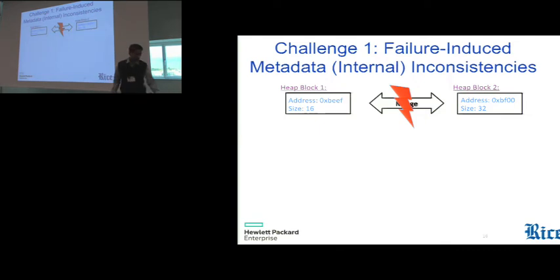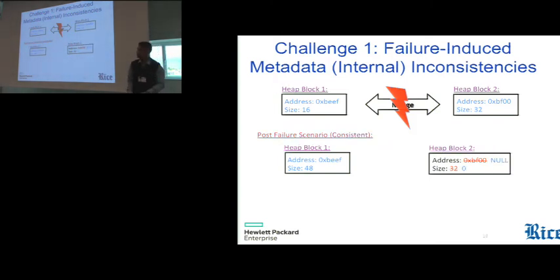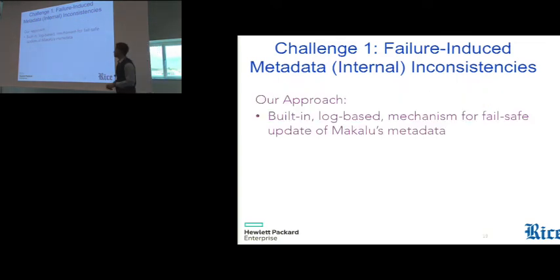So one inconsistent state that may arise is that we had updated the first metadata to reflect the merge block. And before we could update the second metadata, crash occurred, and now we have just created 32 bytes of memory out of thin air. So this is something that we don't want. Consistent update would have been where we had nullified the second metadata that is no longer needed. So our approach is to have a built-in log-based mechanism for fail-safe update of internal metadata, and we discussed the details of which in the paper.